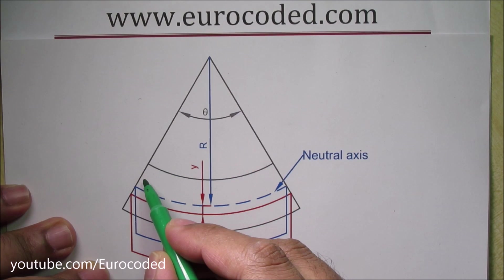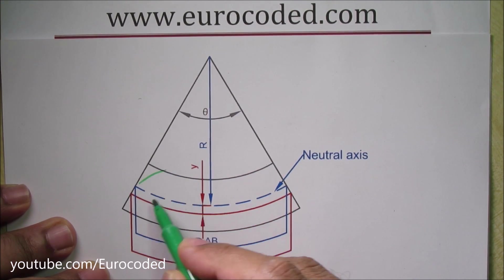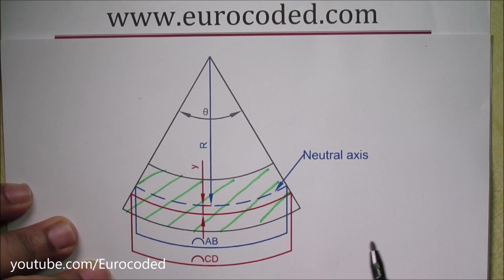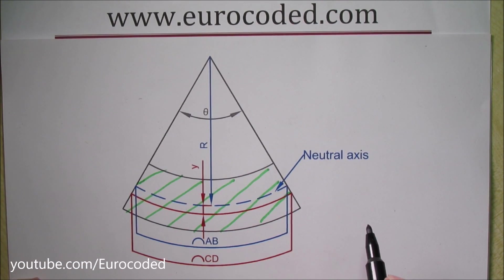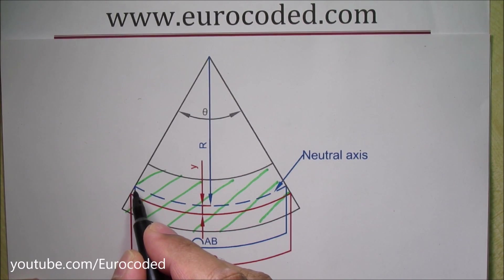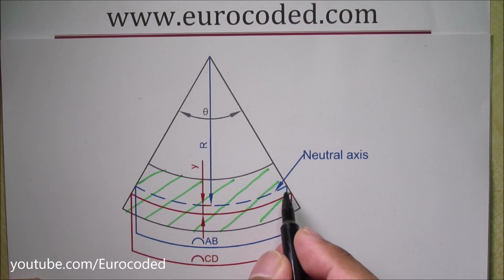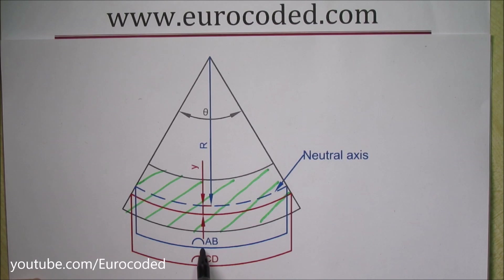The beam section we are considering in here is this. Let's develop the relationship between strain and radius of curvature. If you look at this neutral axis, which is drawn in this dashed line blue colored dashed line, the length of that neutral axis is noted as AB.